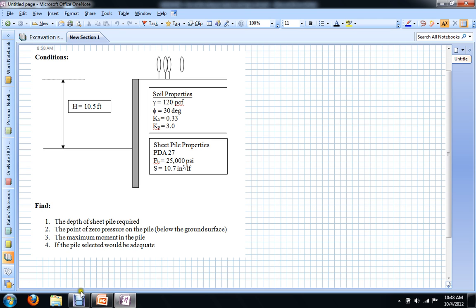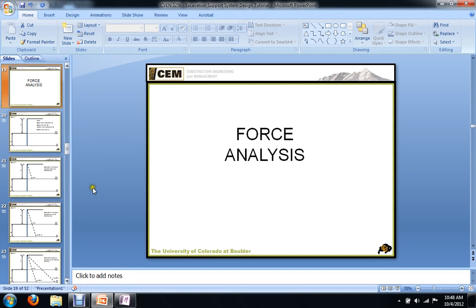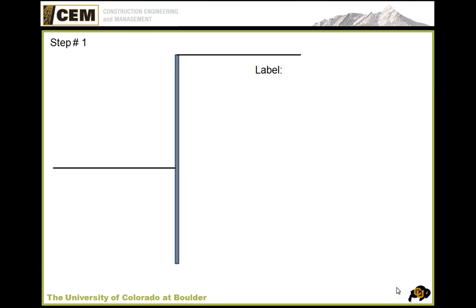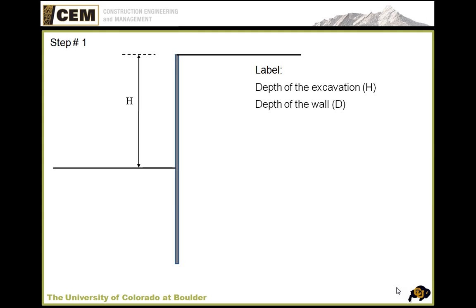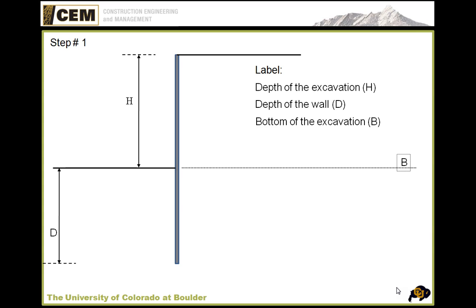Let's get into the force analysis for a sheet pile wall, going step-by-step through the example problem. The first step is to label the diagram so we all share the same reference points. The depth of excavation is labeled H. The depth of the wall below the excavation is D. We label the bottom of the excavation as point B — at depth H — and the bottom of the pile, at the total driven depth, as point J.